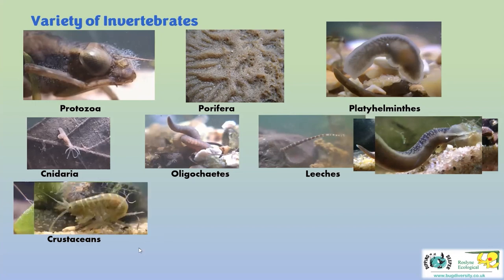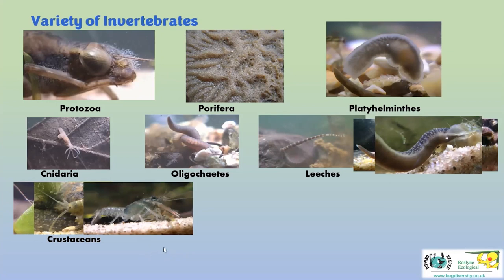More active and needing slightly better conditions are the freshwater shrimps. In a chalk stream you should quite easily find thousands of these in a standard three-minute kick-sweep sample. Sadly in quite a few rivers the numbers are down to low hundreds or even lower. They're a really important food for trout, so we need to find out why there are so few in some of our best chalk streams.